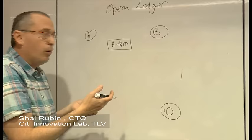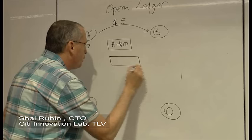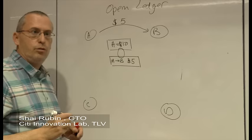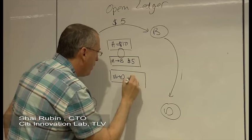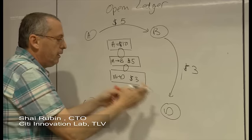Let's say that A wants to move to B $5. What is going to happen is that we are going to add a transaction, A moved to B $5, and we are going to link it into the already existing transactions. Then, let's assume that B wants to move to D $3. So we are going to do the same. We are going to link another transaction into the ledger, into the chain that says B moves to D $3.